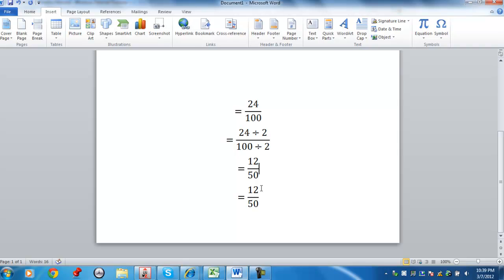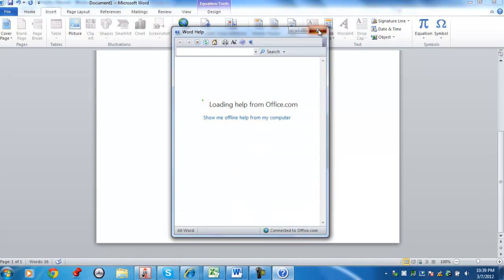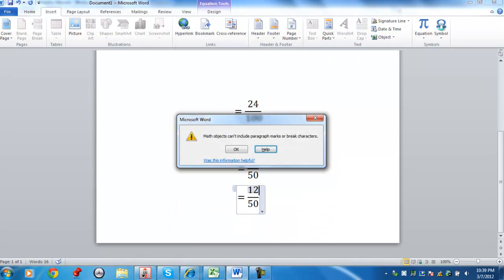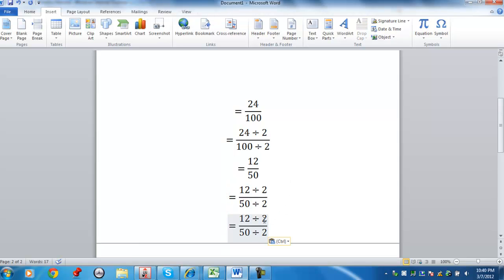So I can say, alright, 12 divided by 2, I can take 50 divided by 2. And then I can reduce again. And as a result, you will get 6 over 25.